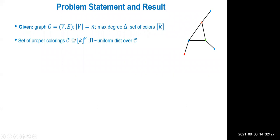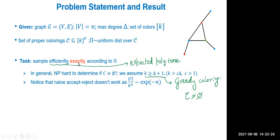So what is the problem statement? Suppose you are given a graph with n vertices, and a promise that the maximum degree is capital Delta. You're also given a set of k colors — meaning one through k — and what we have to do is produce a uniformly random sample from the set of all proper colorings on this graph. A proper coloring is a function assigning a color to each vertex such that adjacent vertices receive different colors.